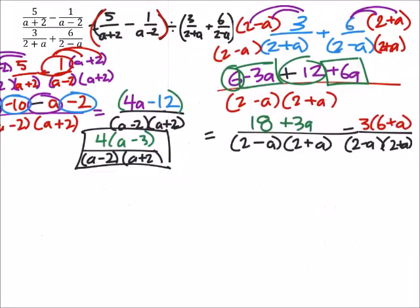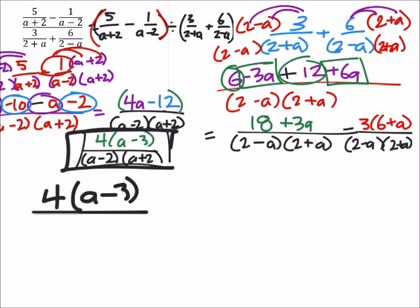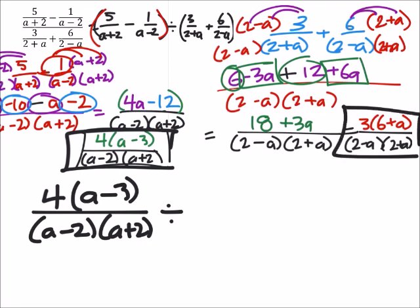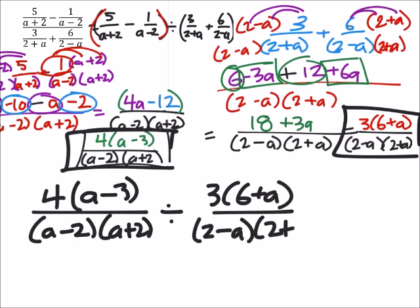I haven't forgotten about that other term, but let's look at all of this. Let's rewrite this. On the left here I had this expression, so I got that 4 and then the a minus 3 all over a minus 2 and a plus 2, and this is divided by what we had right here, which was 3 times 6 plus a all over 2 minus a and 2 plus a. We have these two expressions that are being divided, which means that we can now reciprocate that second part of the expression.